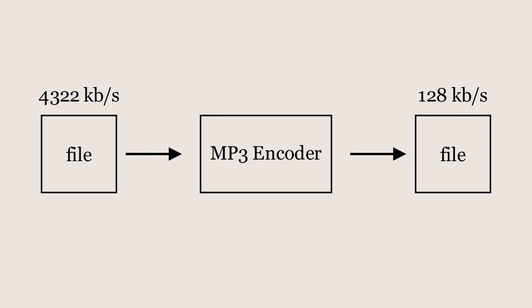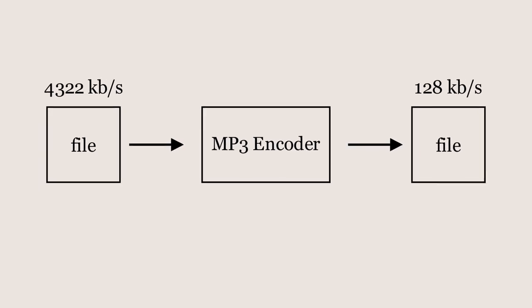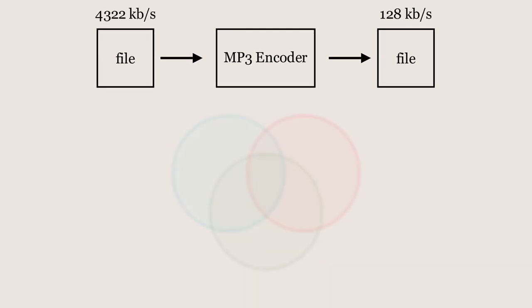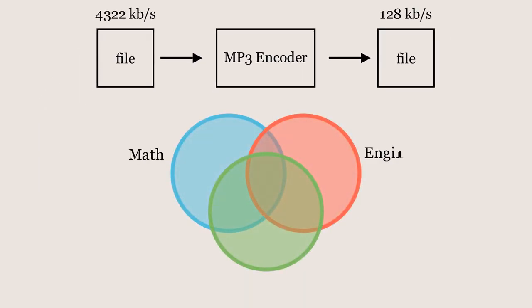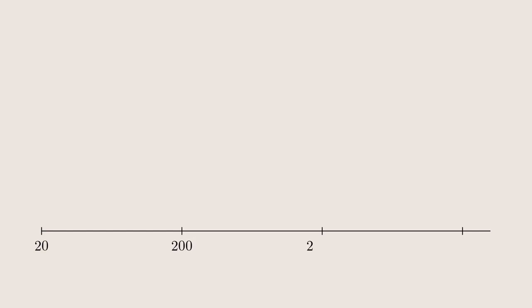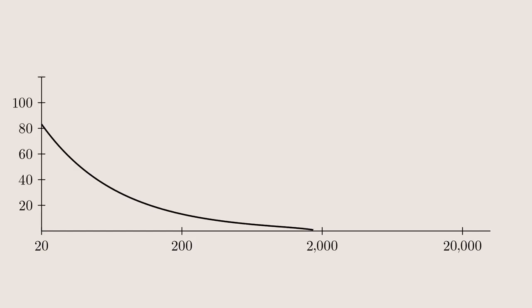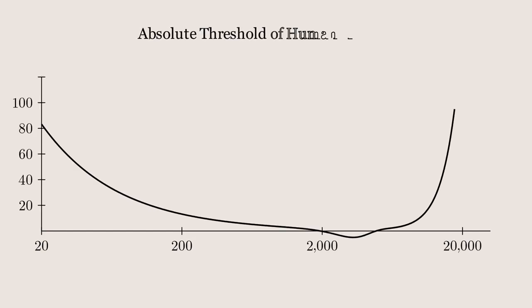This makes it a fascinating intersection between human physiology, math, and engineering. To understand how the MP3 encoder can remove so much data and still have songs and other audio recordings sound the same, we first need to understand how the human ear works.